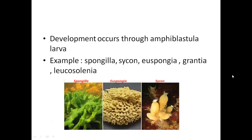In sexual reproduction, the organism involves both sexes. Development in porifera is direct. A larva called the amphiblast is produced, which then develops into a new organism.